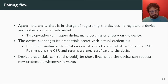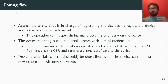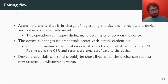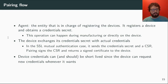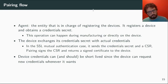How does the pairing flow work? The agent — the entity in charge of registering devices — registers the device and obtains a credential secret. This can happen during manufacturing, so devices ship already with the credential secret burned in OTP, or directly on the device. After that, the device exchanges this credential secret for actual credentials. In the SSL mutual authentication case, the device sends a certificate signing request and the pairing API returns a signed certificate, verifying that the credential secret is the device's own.